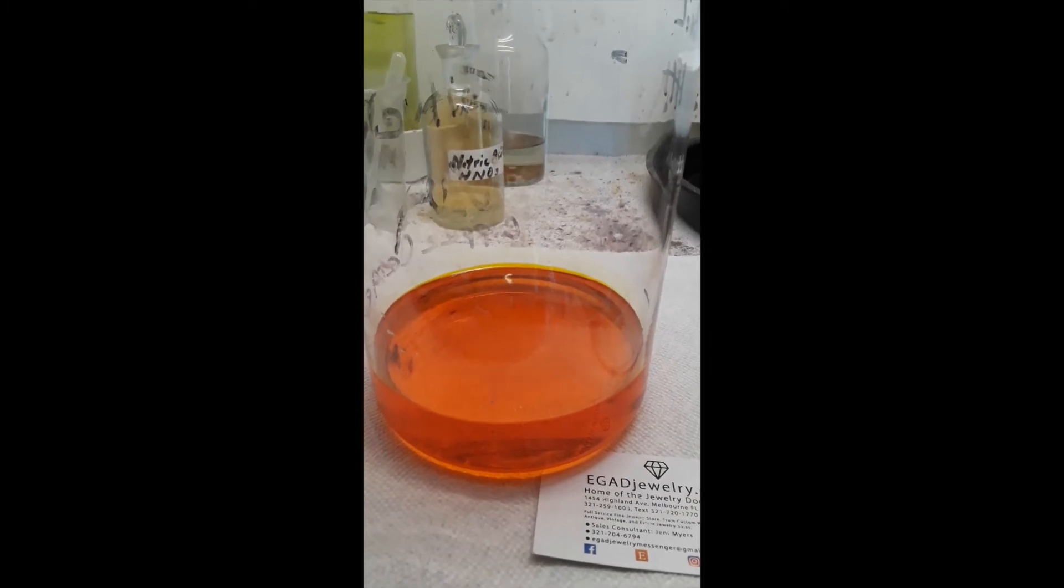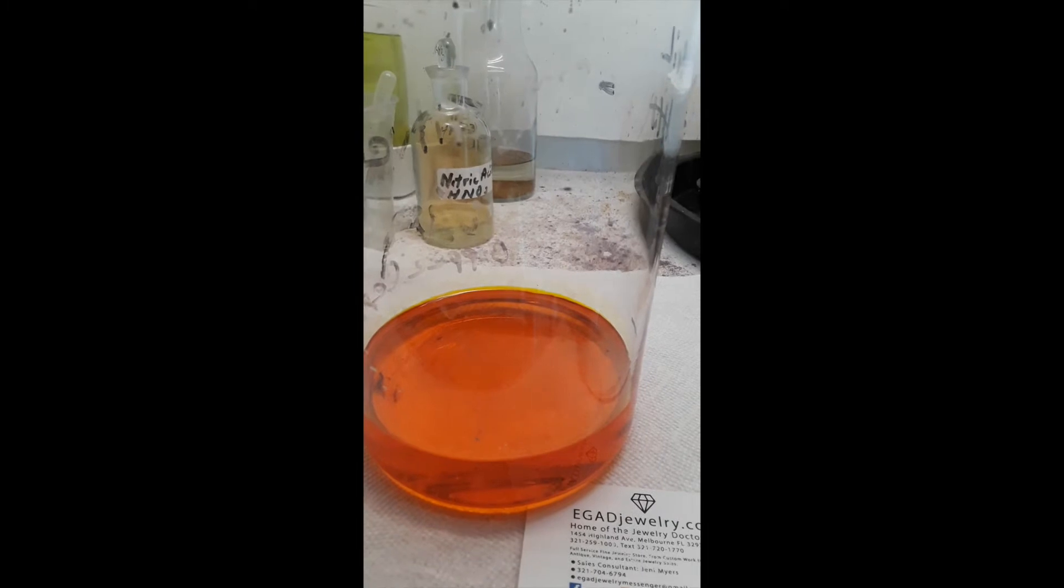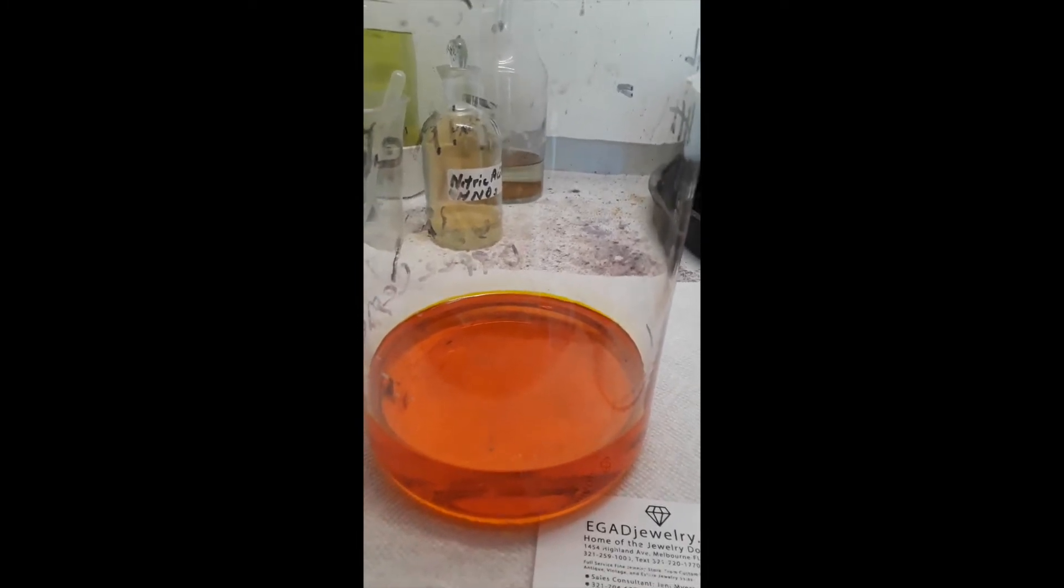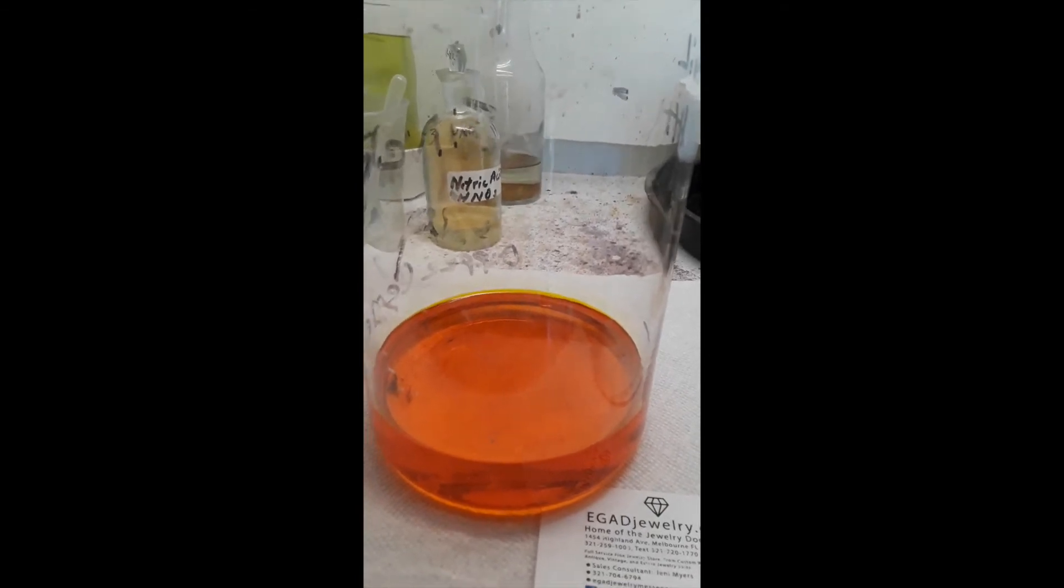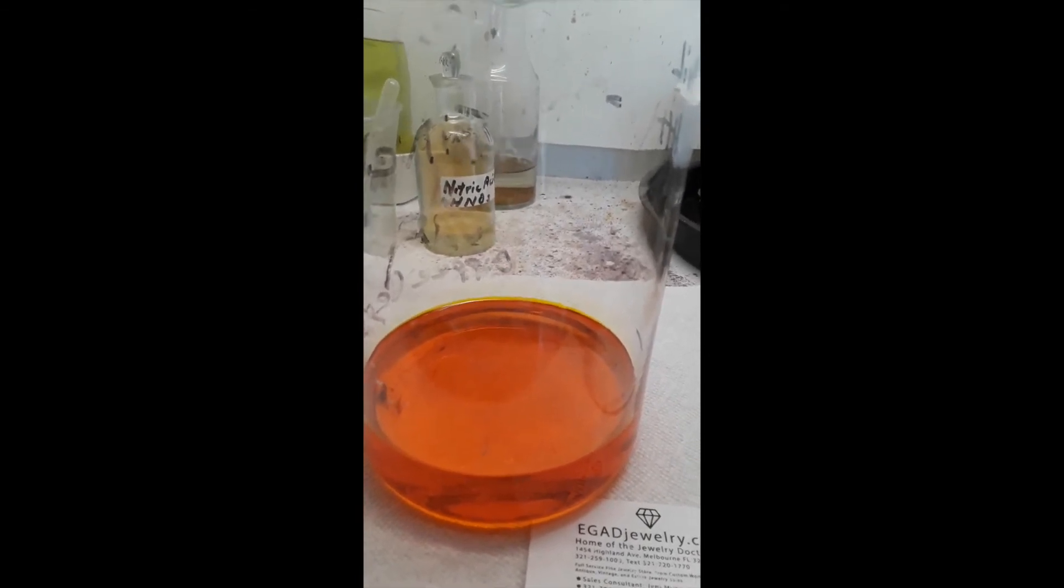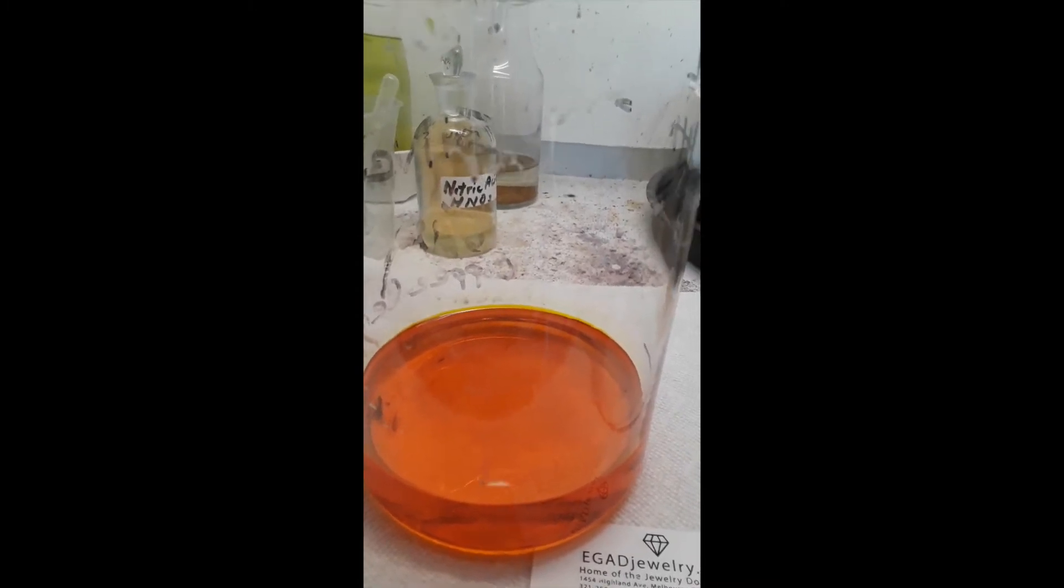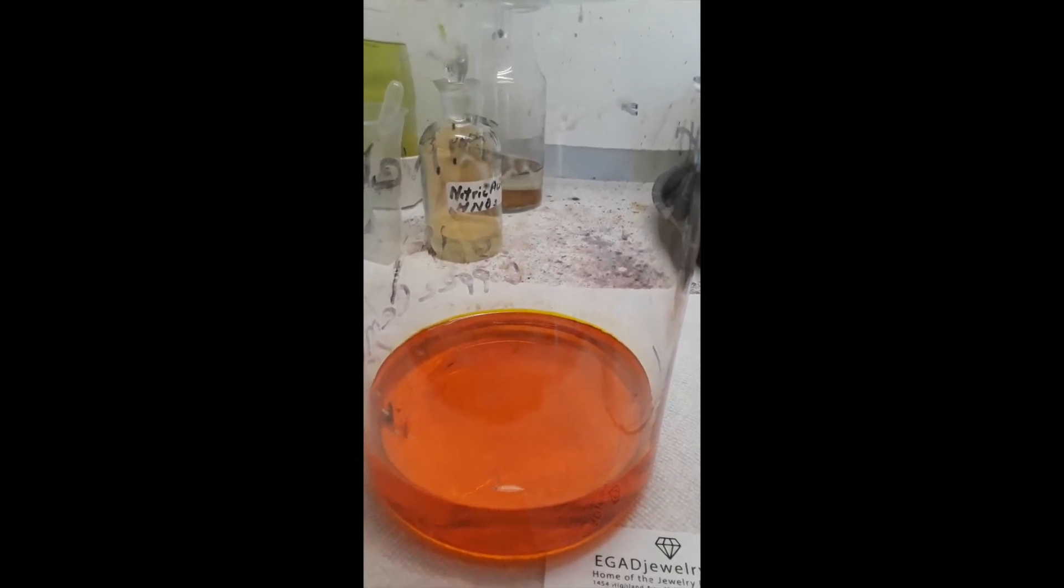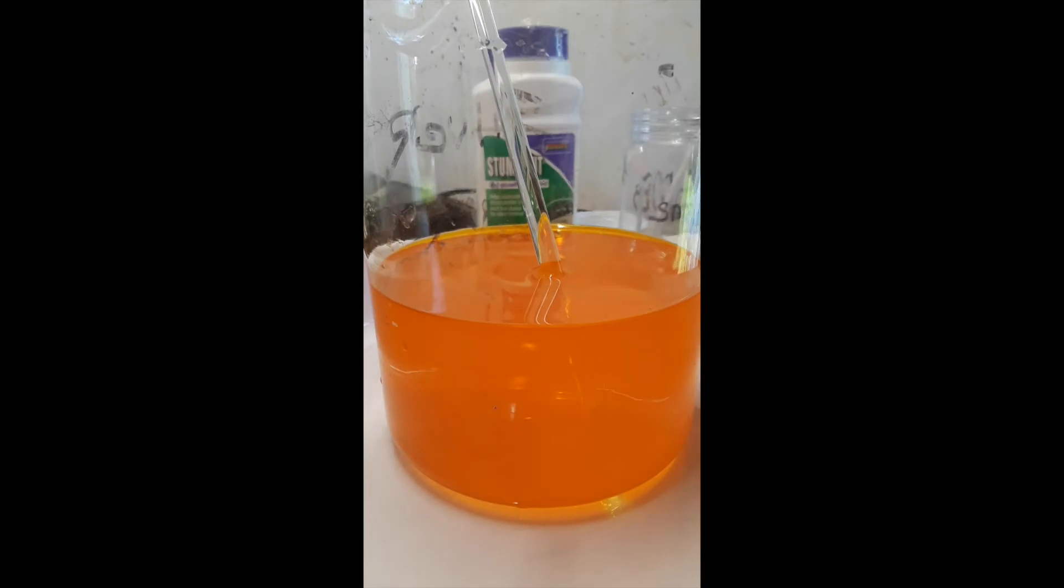The solution will turn dark, and that is the gold coming out of the solution. And when I've added enough sodium metabisulfite, all the gold will drop to the bottom of the beaker. I'm going to throw a couple of ice cubes in here before I get started because this chemical reaction with the SMB always raises the temperature considerably. Okay guys, let's get started.